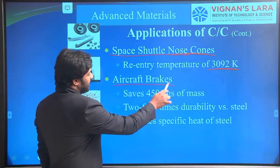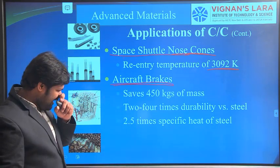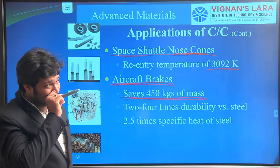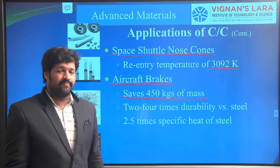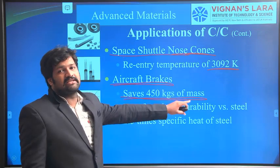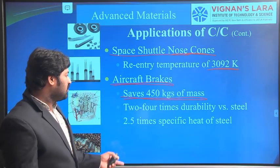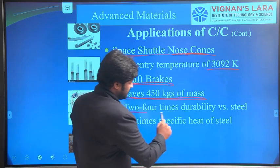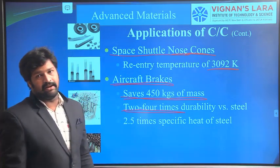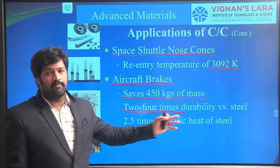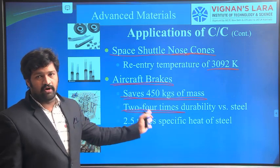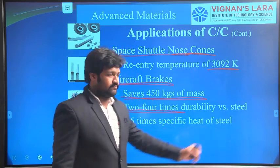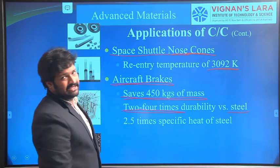Due to the low density of carbon composites used in aircraft brakes, about 450 kg of mass is saved. Their durability is 2 to 4 times that of steel — if a steel component lasts one year, the carbon composite component will last 2 to 4 years. They also have 2.5 times the specific heat of steel.